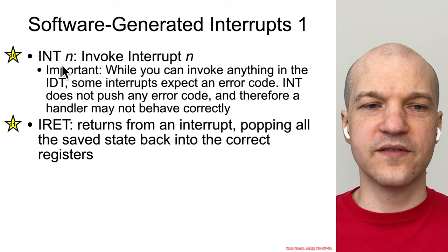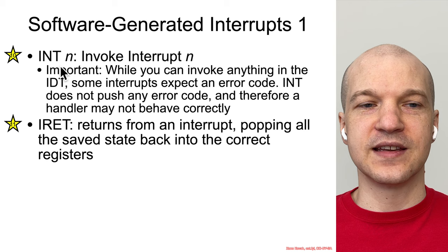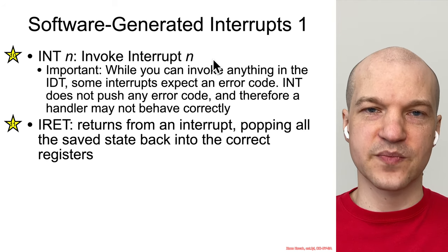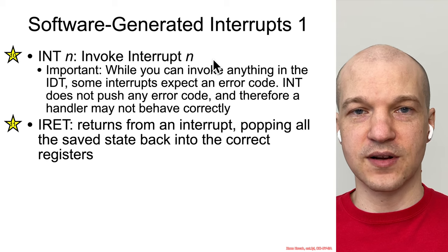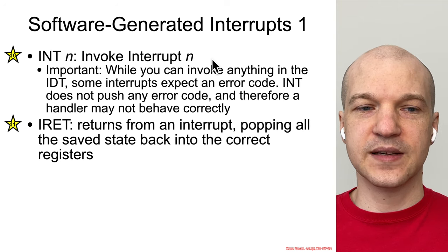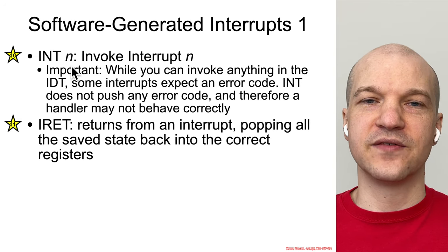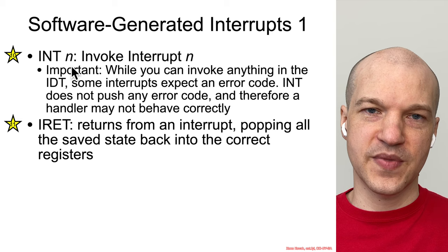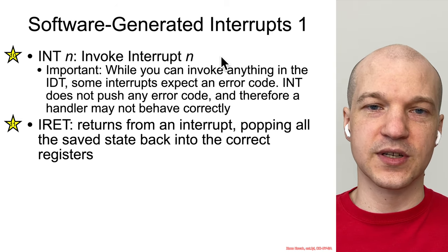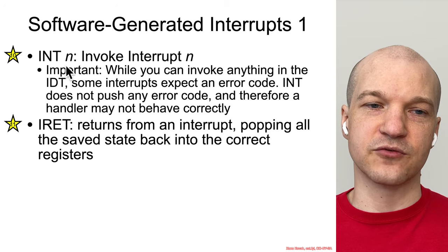One of the things that can cause an interrupt is literally the interrupt instruction, and it can do 'int n' where n is a particular interrupt number. There are many different interrupts. We'll talk about the interrupt descriptor table in a second — basically this will invoke a specific interrupt from the interrupt descriptor table. Normally the table is used to handle various hardware conditions, but you can invoke those conditions with a software interrupt instruction.